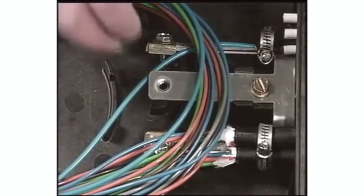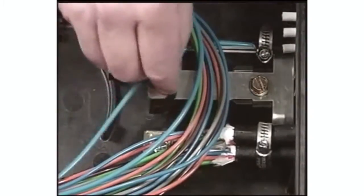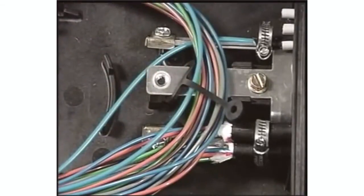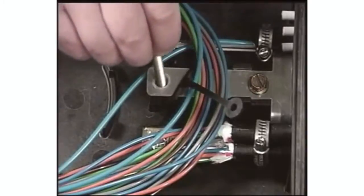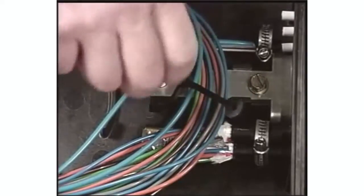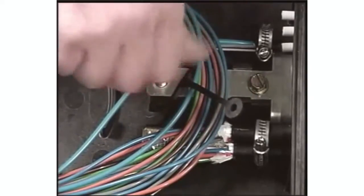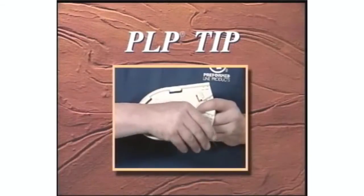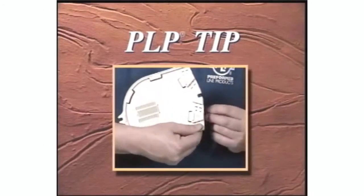Install the splice tray hold-down strap on each end. Install the splice tray stud on each end. PLP tip, install the tie wraps into the splice tray before installing the buffer tubes.